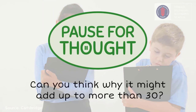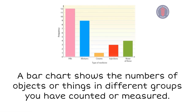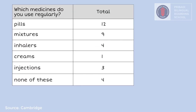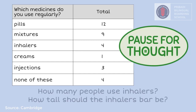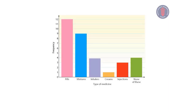Can you think why it might add up to more than 30? You can use your tally data to draw a bar chart that will show very clearly how many people take their medicine in each way. How many people use inhalers? How tall should the inhalers bar be? Four people used inhalers, so the inhalers bar should be four lines tall.